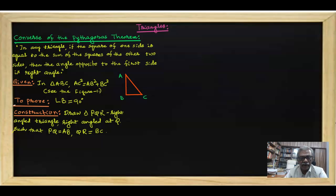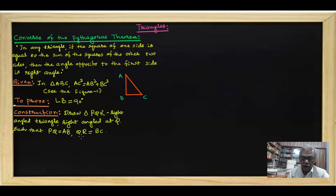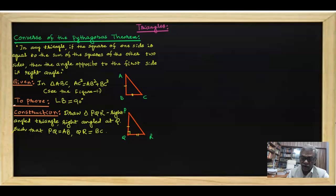Construction: draw a new triangle PQR, right angled at Q, such that PQ is equal to AB and QR is equal to BC. In this fashion, we can construct a right angled triangle PQR as shown in the figure, where PQ equals AB and QR equals BC, right angled at Q.